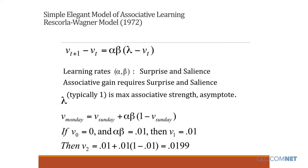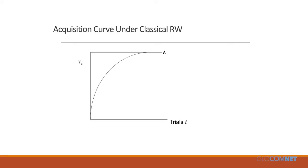This pattern is captured by the Rescorla-Wagner equations, where the associative strength V(t+1) is the associative strength on Monday plus a learning rate times the maximum association minus the old learning rate. V(t+1) = V(t) + learning_rate × (1 − V(t)). This produces a very classical S-curve of associative learning — acquisition of the association.